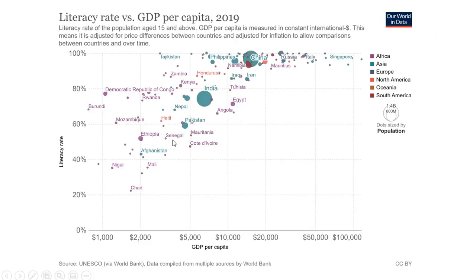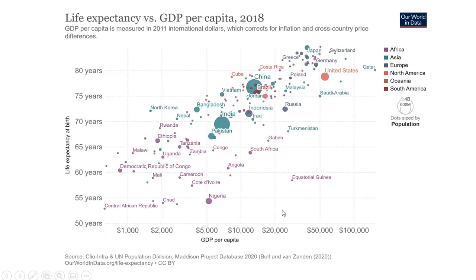Literacy rate versus GDP per capita: as GDP per capita increases, literacy rates increase. Life expectancy versus GDP per capita: as GDP per capita increases, life expectancy at birth rises.